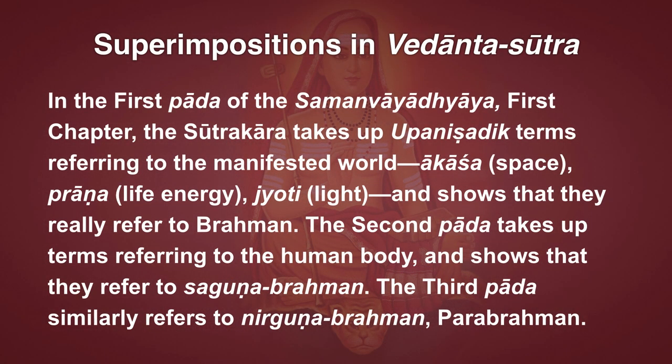In Vedanta Sutra, there are more than 20 different ways to meditate on Brahman through various symbols using superimposition. In the first Pada of the Samanvayadhyaya — the first chapter — the Sutrakar takes up Upanishadic terms referring to the manifested world: akasha (space), prana (life energy), jyoti (light), and shows that they really refer to Brahman. The second Pada takes up terms referring to the human body and shows that they refer to Saguna Brahman. The third Pada similarly refers to Nirguna Brahman, Parabrahman, or Brahman without qualities.